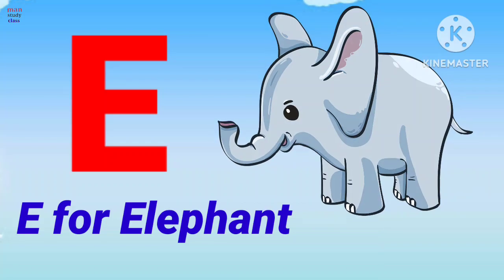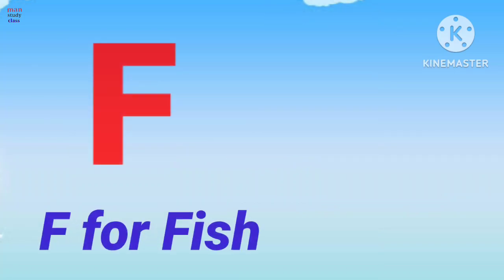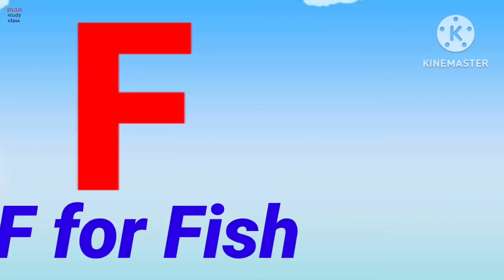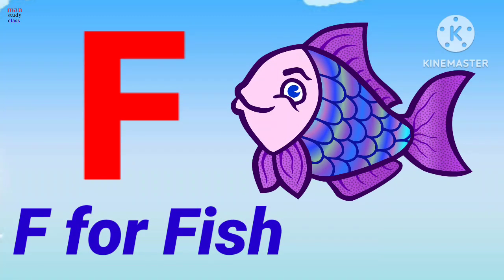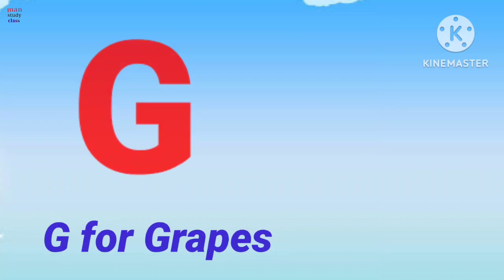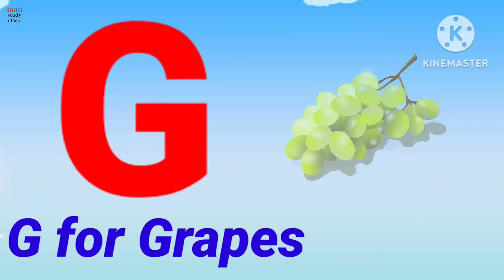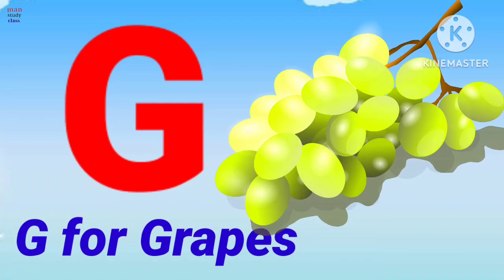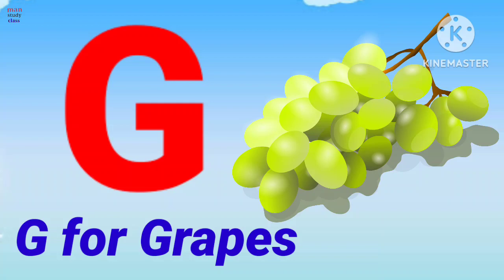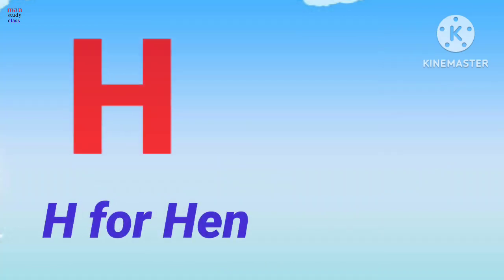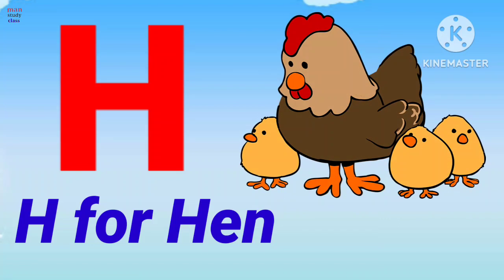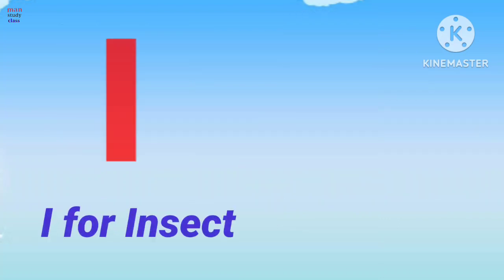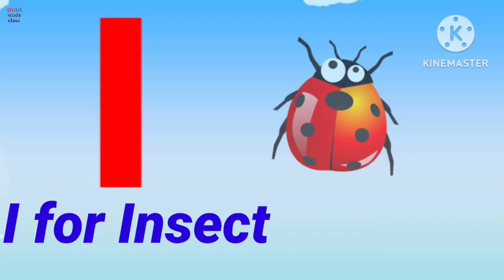E for elephant, elephant means athi. F for fish, fish means machli. G for crabs, crabs means sangur. H for hen, hen means murgi.